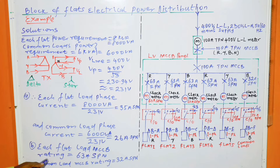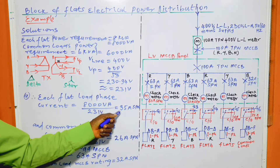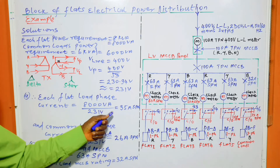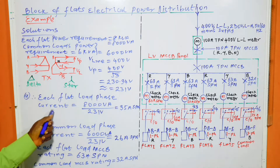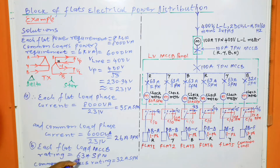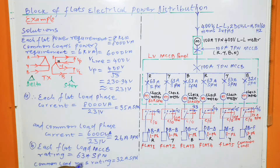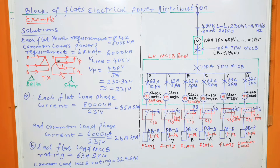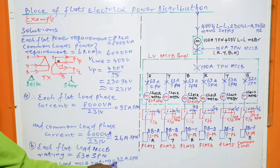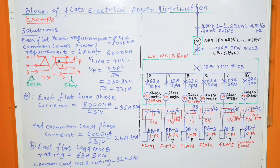Part B: each flat's load MCB rating is 63 amperes, single-phase with neutral. The calculated phase current was 35 amperes, and the nearest standard MCCB rating above that is 63 amperes. The common load MCCB rating is 32 amperes, which is the standard value slightly higher than the calculated 26 amperes but not lower than it.